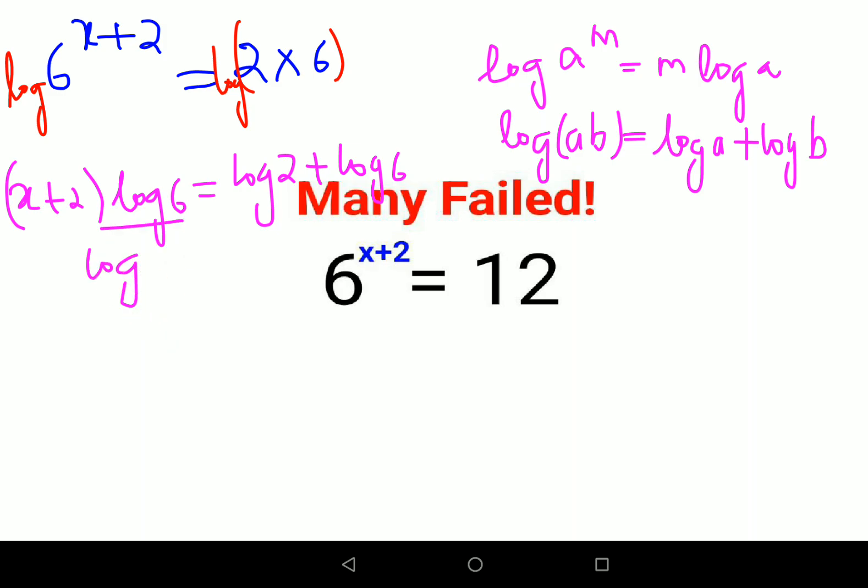Now next, we'll divide both sides by log 6. This will get cancelled, but on your LHS don't make the mistake of cancelling these two - that's not allowed because there's a plus involved in your numerator. So what we'll have is x plus 2 will remain as it is, and here we'll have log 2 upon log 6 plus log 6 upon log 6, which is nothing but 1.